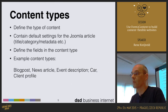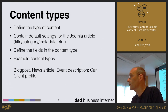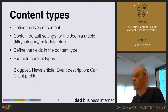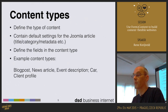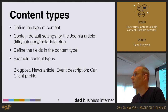Form2Content works with content types, and they define the type of content that you want to create. It contains the default settings for the article you will generate, like the title, the category, the metadata, et cetera. You define the fields which you need in your content type. Example content types are a blog post, a news article, an event description, a car, or a client profile.